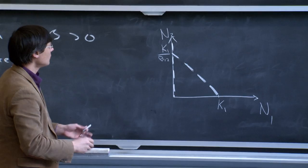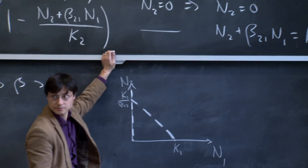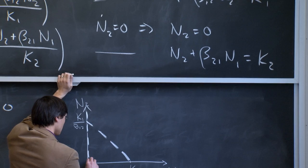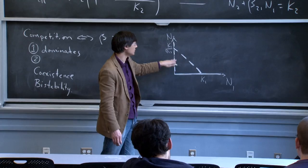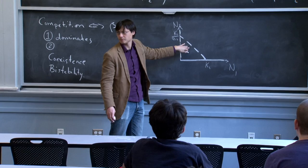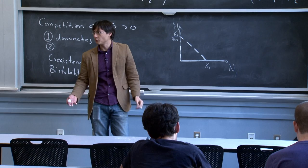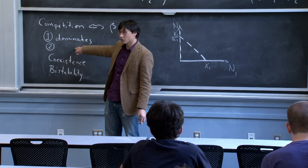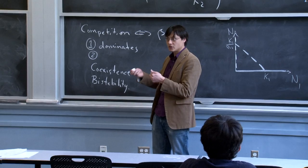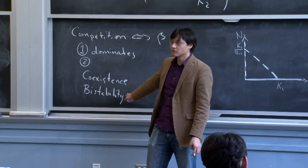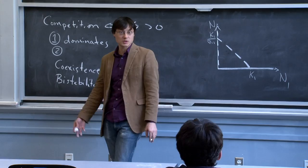Bistability is the only case where the outcome depends on the starting condition when you have a finite number of each species. If you start without one of the two species, you won't get creation of that species, because the only way to get species 1 is to have some species 1 individual in this model.